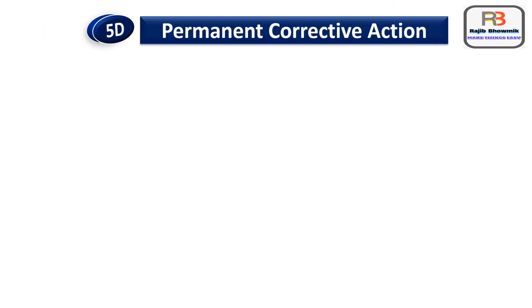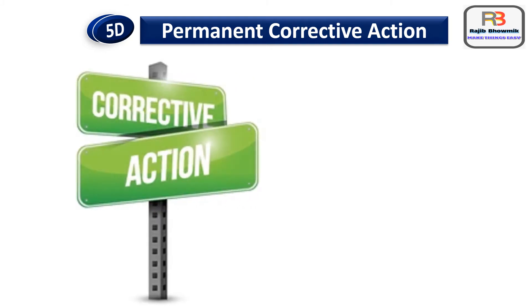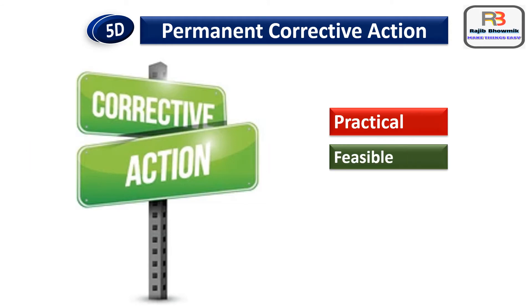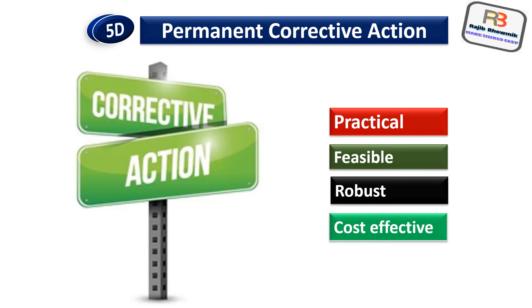5D - Permanent Corrective Action: The team determines which actions and solutions should be introduced to ensure that the process and product is controlled and will make the problem go away without leading to other unwanted issues. Criteria for choosing the best solutions are: practical, feasible, robust, and cost effective.